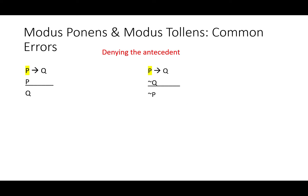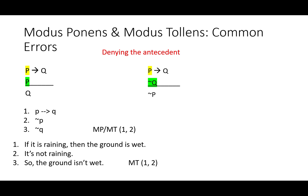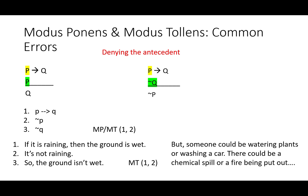Now consider denying the antecedent — the antecedent is the first part of the conditional, P. Modus ponens gives you the consequent from the antecedent, and modus tollens denies the consequent. But if you deny the antecedent you run into trouble: 'if P then Q, not P, therefore not Q' — this is not actually either rule. For example: 'if it is raining then the ground is wet, it's not raining, so the ground isn't wet.' But that's easy to disprove — someone could be watering plants, washing a car, or there could be a chemical spill. There's a reason this isn't a rule: it's not a valid inference.